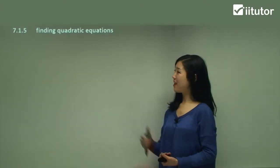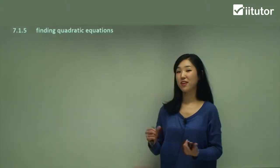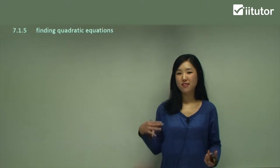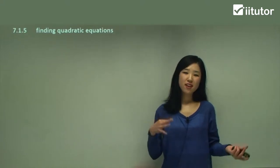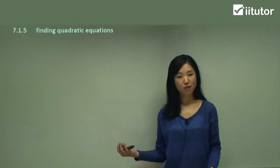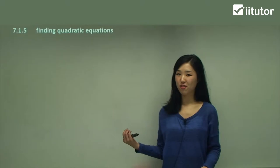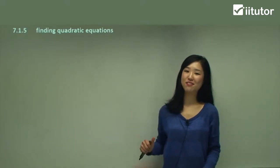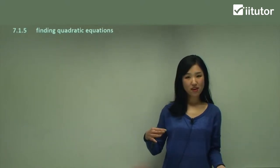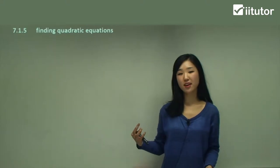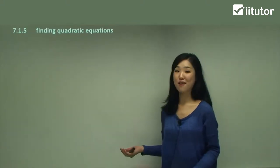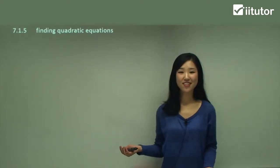Now we're going to be finding quadratic equations. So up to now we had the process of finding some aspects to find the complete graph — we've learned how to sketch the graph for a given equation. This time we're going to do the opposite by finding the equation of the graph by looking at the graph. So let's get started.